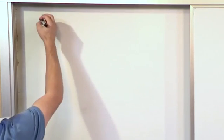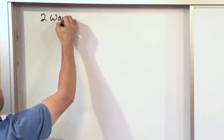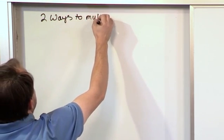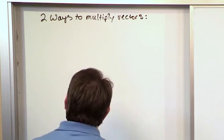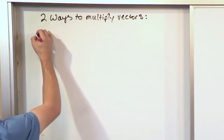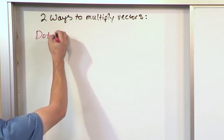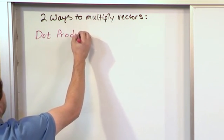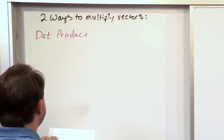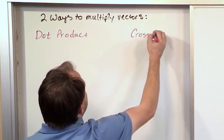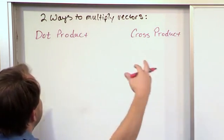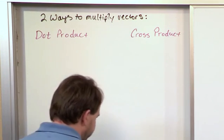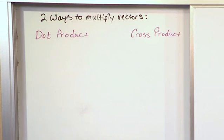So let's jump into it. There are two ways to multiply vectors. The first is the dot product, which we're going to be learning about here. And later on we'll talk about something called the cross product. The big picture is that there are two fundamental ways to calculate what you get when you multiply two vectors together.